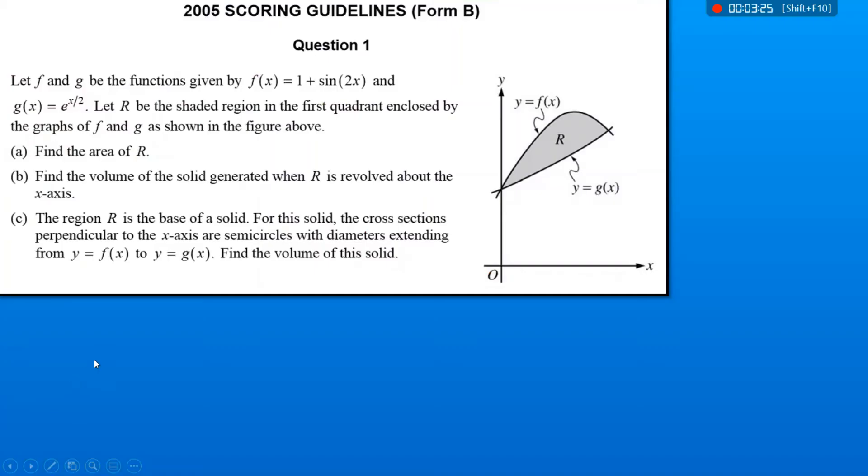This is all kind of review, so let's get into one. Okay, so I've got two functions here, f of x and g of x. F is 1 plus sin 2x, and g is e to the x over 2. We've got this region shaded in between them right now. So the first thing we want to do is figure out what the area would be between the two functions.